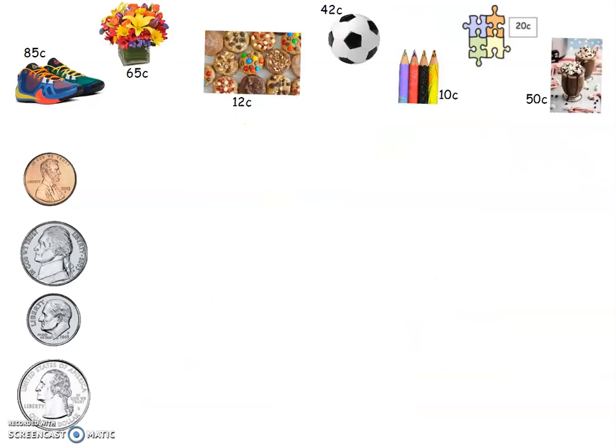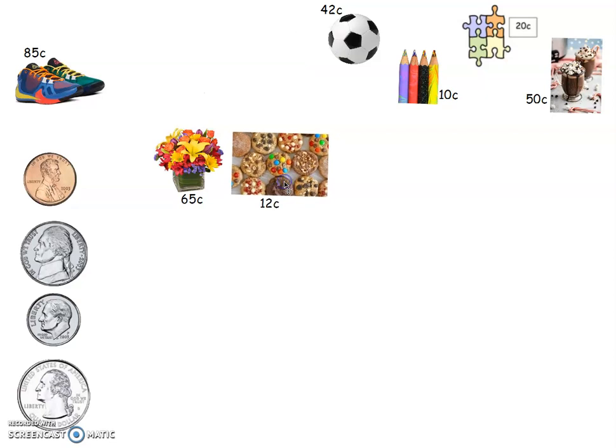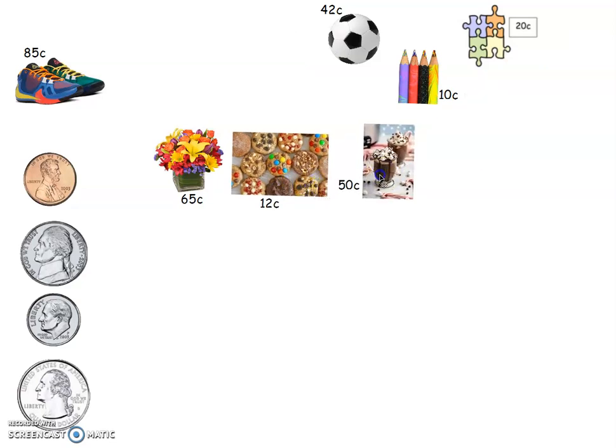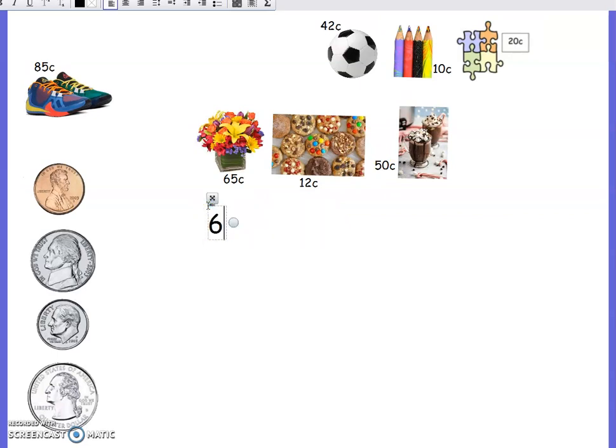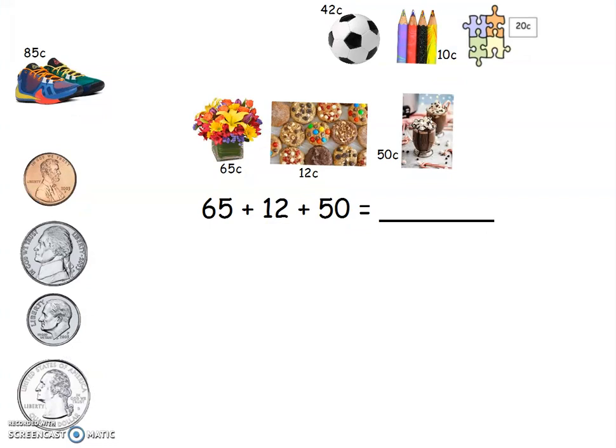Let's do it the other way. I still have my 65, my flowers, 12 cents for my cookies, and 50 cents for the hot chocolate. I'm gonna write my equation this way: 65 plus 12 plus 50 equals. Now we're gonna break it up into tens and ones. I'm gonna break my 65 into tens and ones, my 12 into tens and ones, and my 50 into tens and ones.